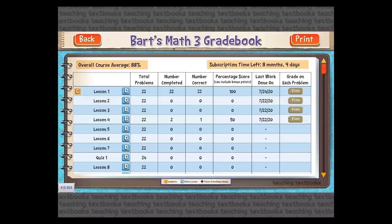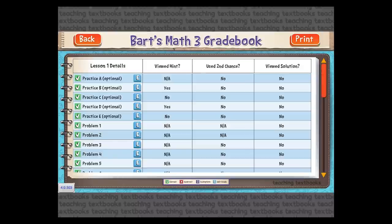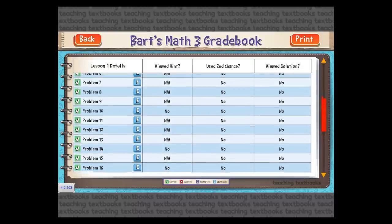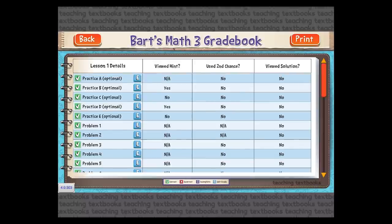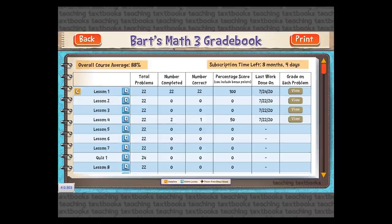On the upper right it tells you how much time is left on your subscription. There's also a Last Work Done column that shows the date the student last did work on each particular lesson. If I want to see the details of a lesson and which problems the student got right or wrong, I hit View — this shows the grade on each problem. There's an E button next to each problem to edit it, letting you change the grade or have the student redo it. Back on the original screen, the D buttons let you delete all grades for a particular lesson with a single button if you want the student to redo it.